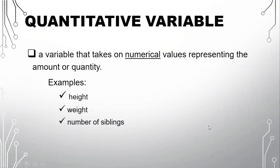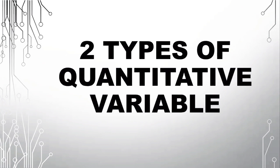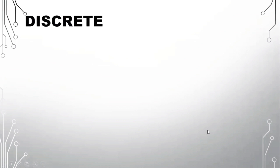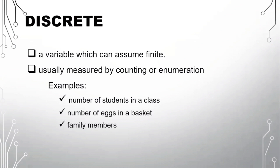Next, we also have two types of quantitative variable. The first type is the discrete quantitative variable. It is a variable which can assume finite. It is usually measured by counting or enumeration. Examples: number of students in a class, number of eggs in a basket, and family members.